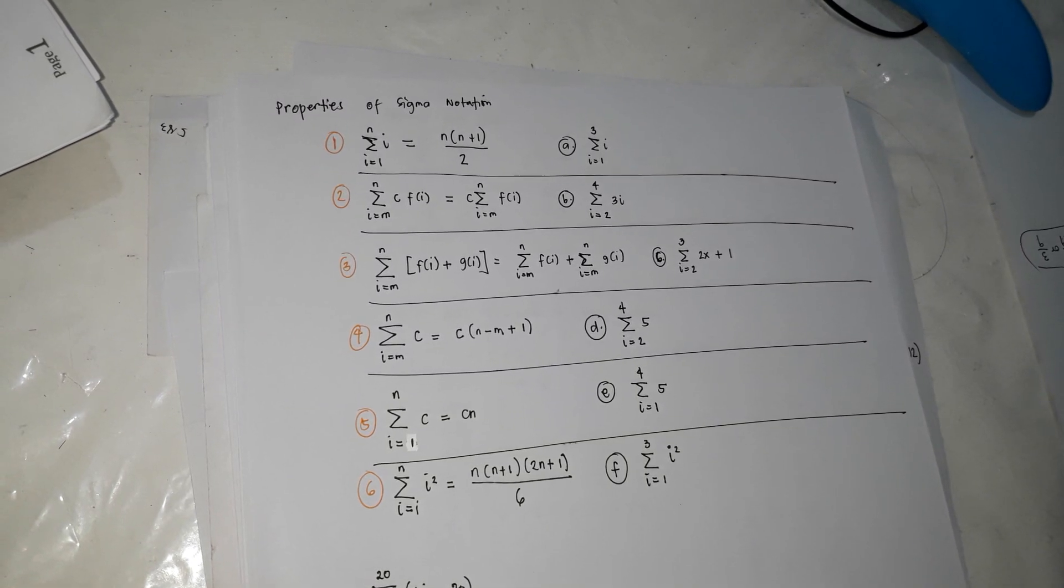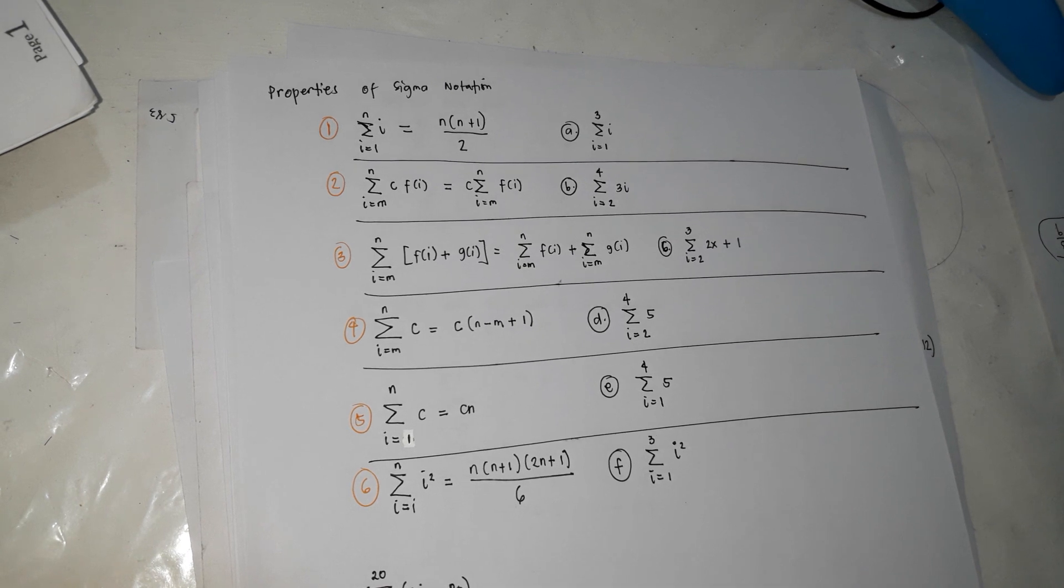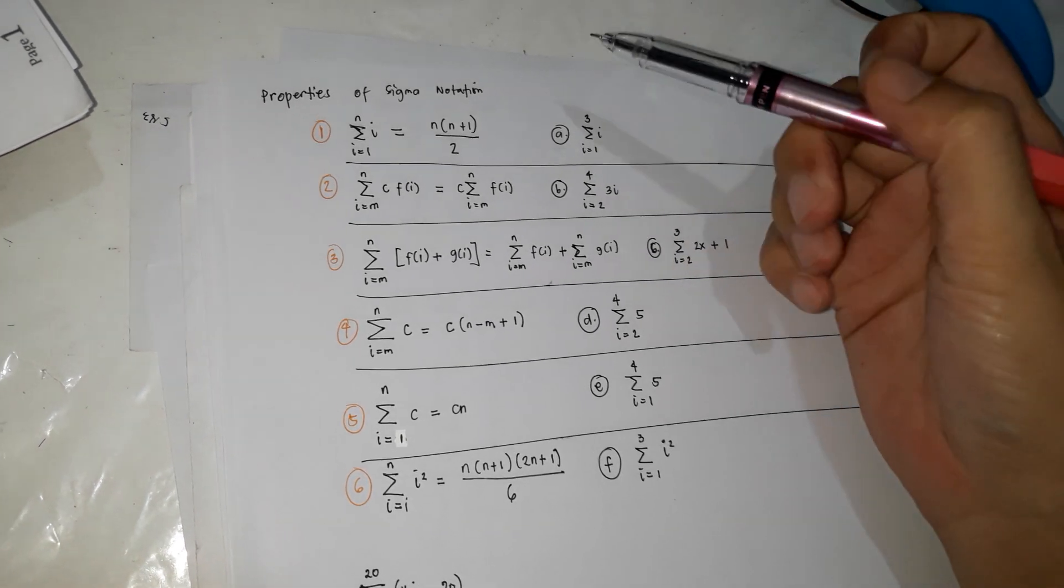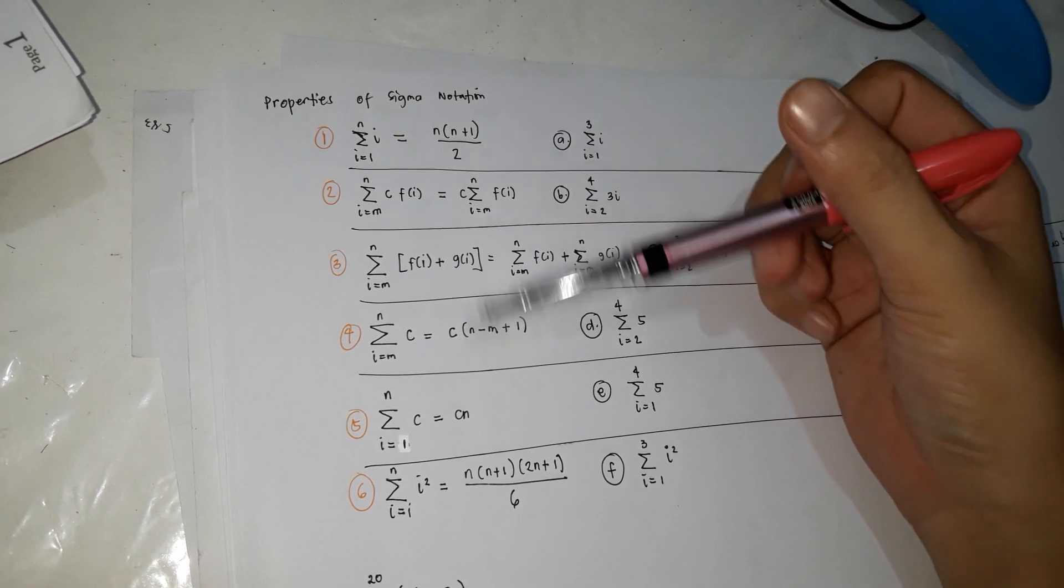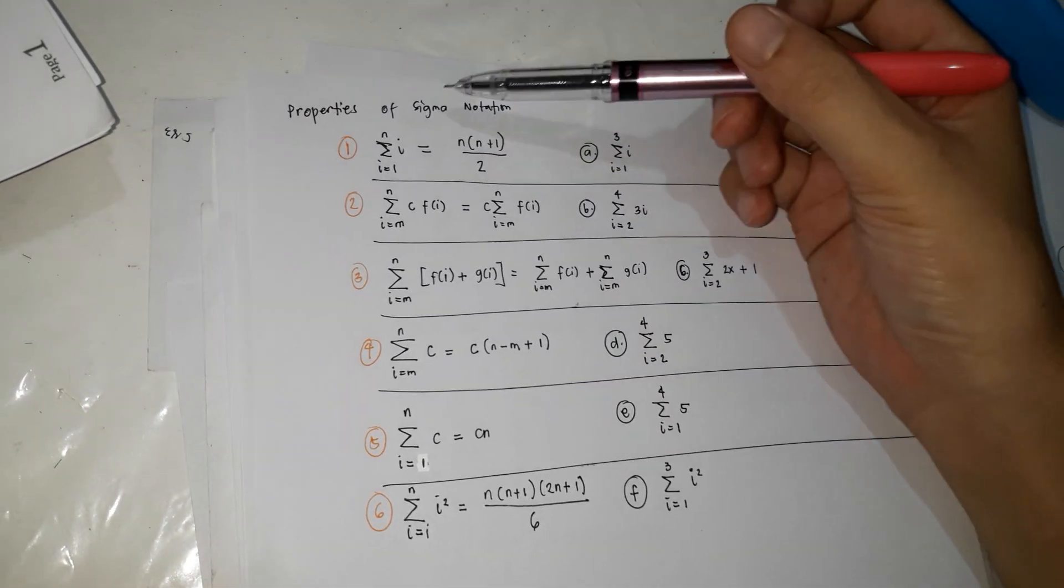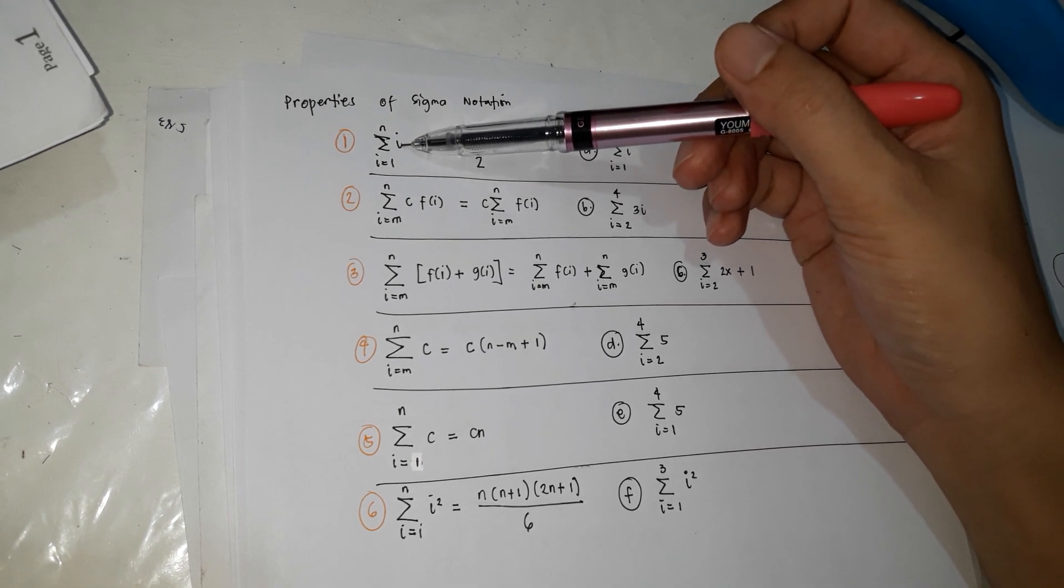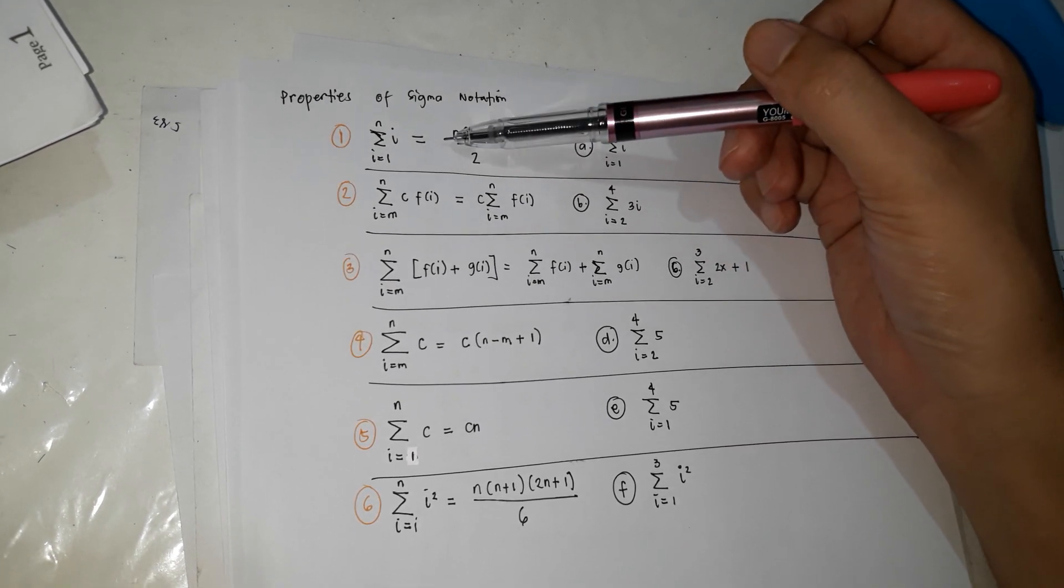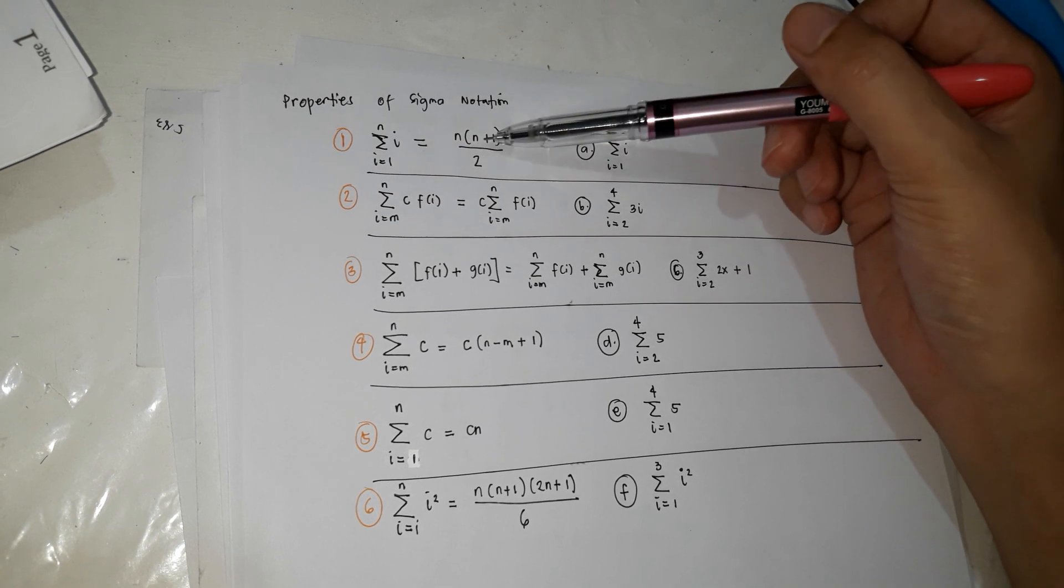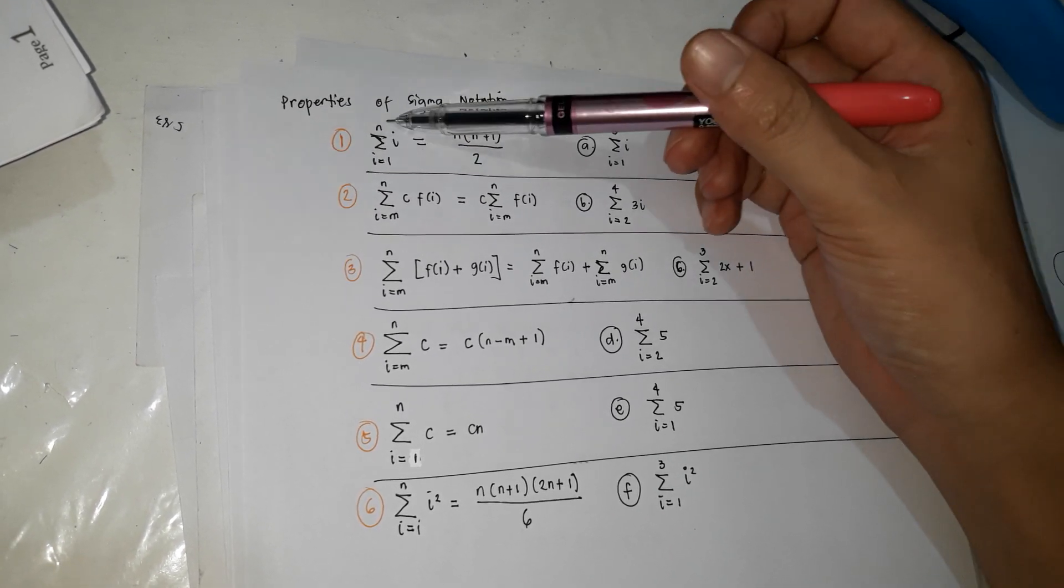So now we're going to proceed with the properties of sigma notation. For us to identify the properties of sigma notation, these are the properties. There are 6, we're given with 6. So first one is, if it is from 1 to n, and it's a summation of i,